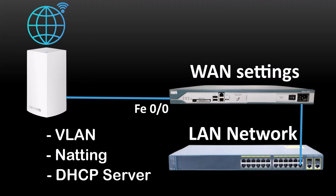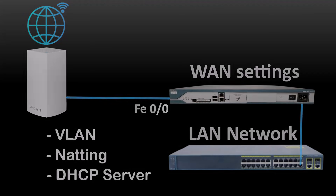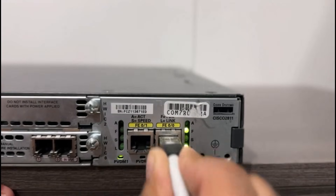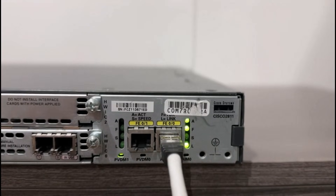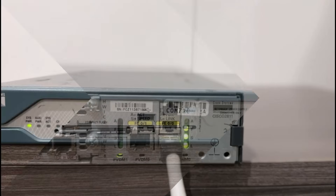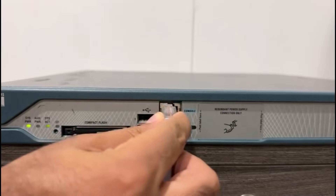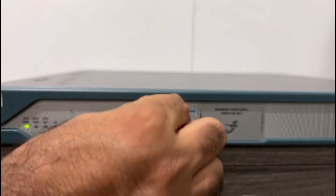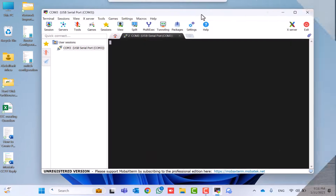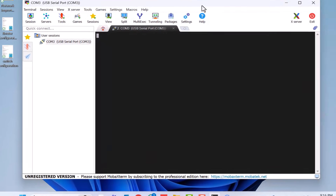Now, let's go to our Cisco router and do some physical connectivity. This is the backside of my Cisco router, and I will connect the LAN cable from my ISP router to the FastEthernet 0/0 port. Next, I will connect the console cable to the console port of my Cisco router. Now, let's log in and start our configuration.